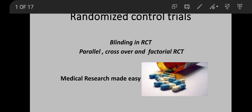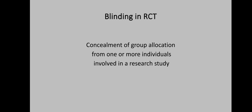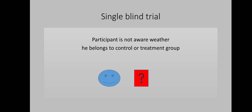So let us discuss what is blinding in randomized control trials. Blinding is basically concealment of group allocation from one or more individuals involved in a research study. Blinding can be single blind, double blind, or triple blind.